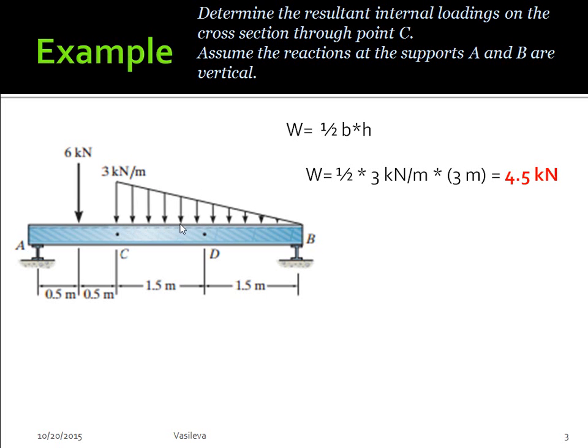Now we want to find where we're going to place this load. Typically the centroid of a triangle is located one-third away from here. We only care about where it's located on the x-axis. So it'll be one-third of this total distance. We have three meters. One-third of that is one meter. So I'm going to place it right there. And our weight is going to be 4.5 kilonewtons.